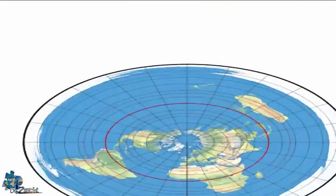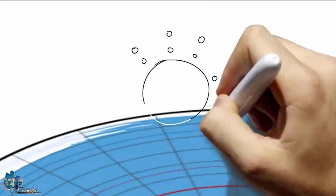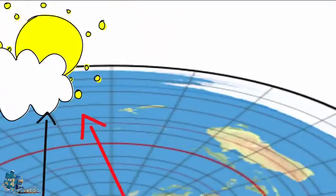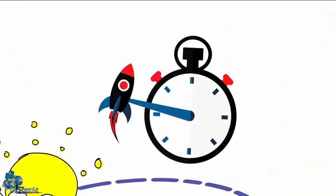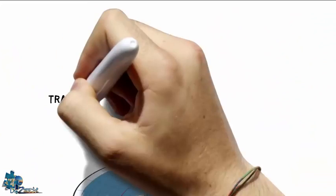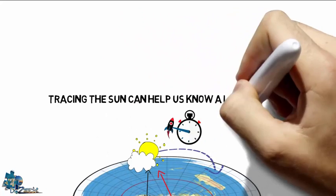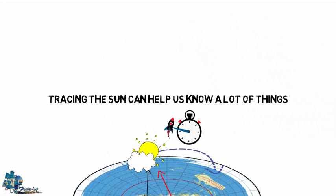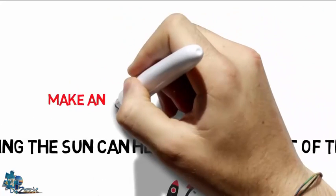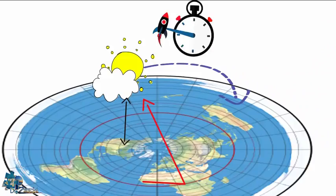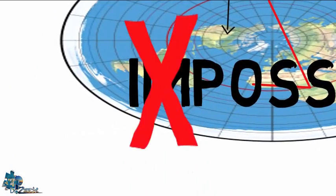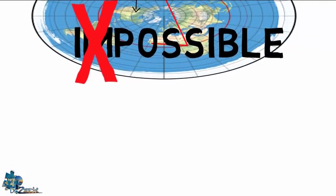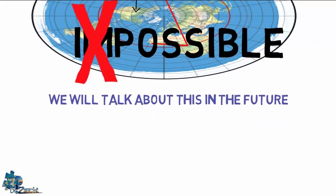In this video I'm going to show you a few things: how to locate the sun, how to measure the distance to the sun, how to draw the path of the sun, and how to measure the speed of the sun. Tracing the sun can help us know a lot of things, and the most important is to make an accurate flat earth map — it's not impossible, we just need to help each other. We'll talk about this in the future.